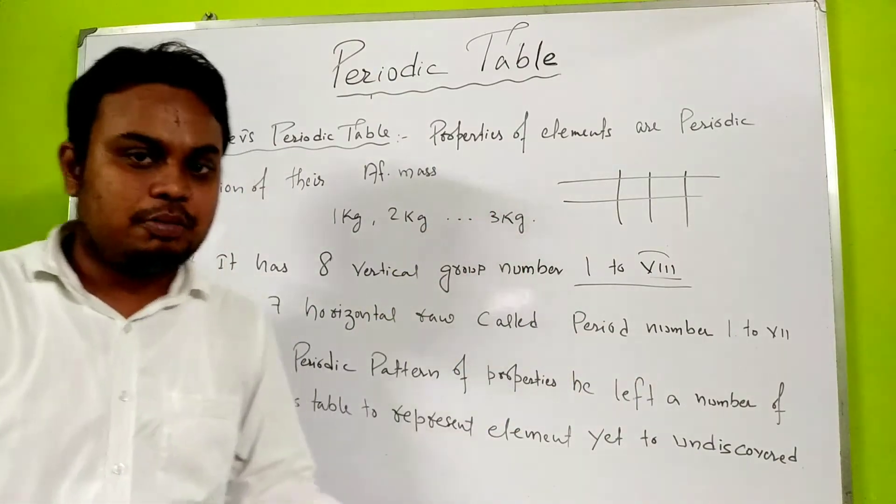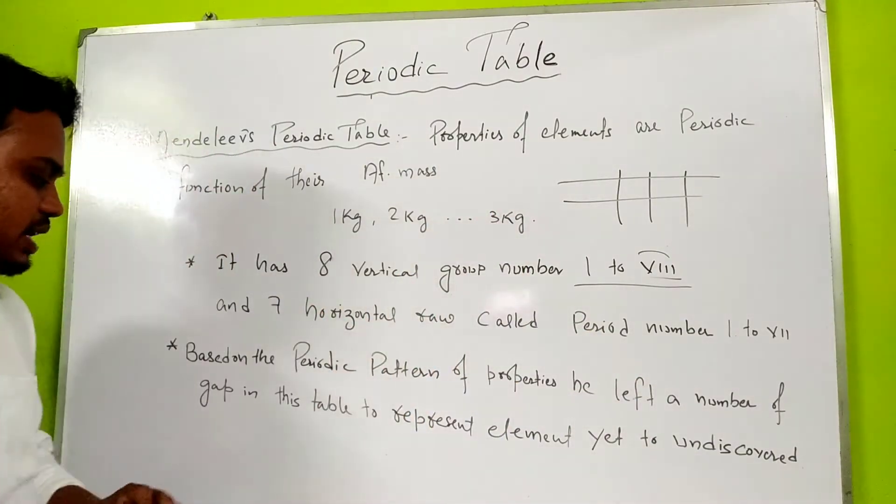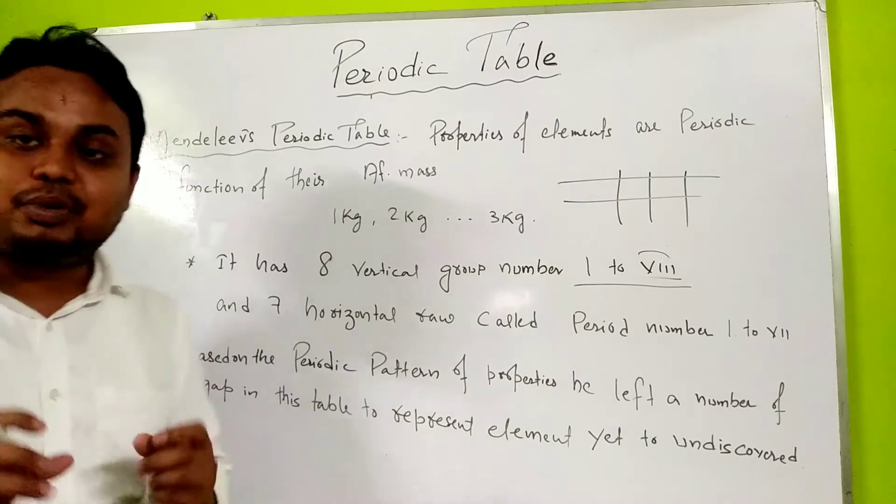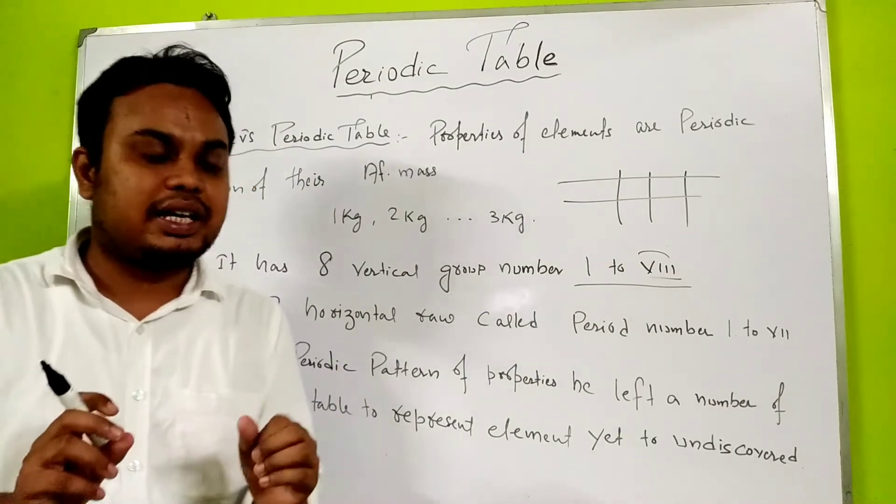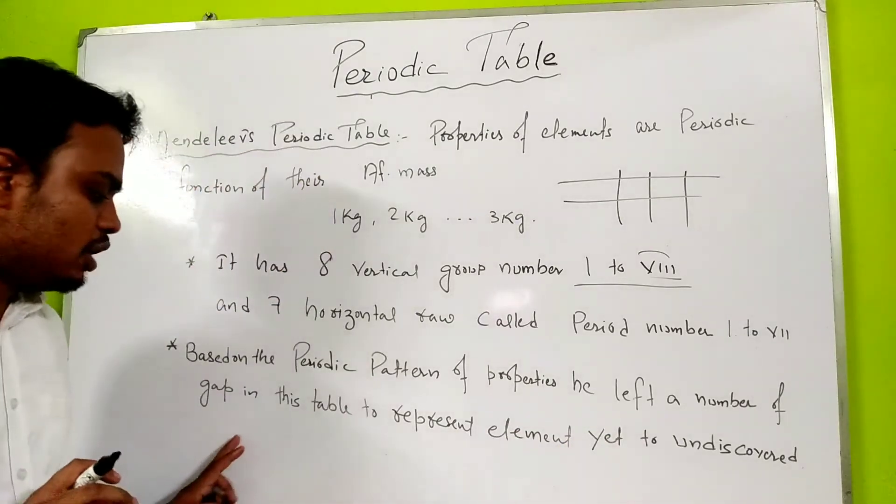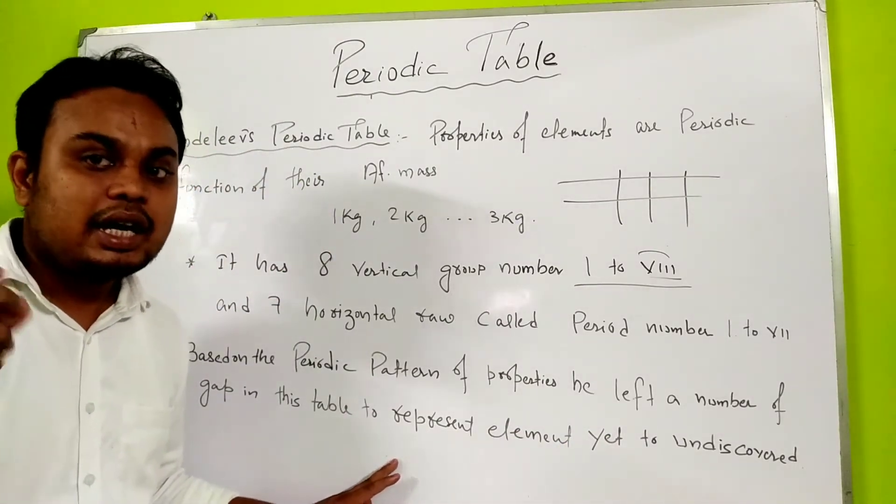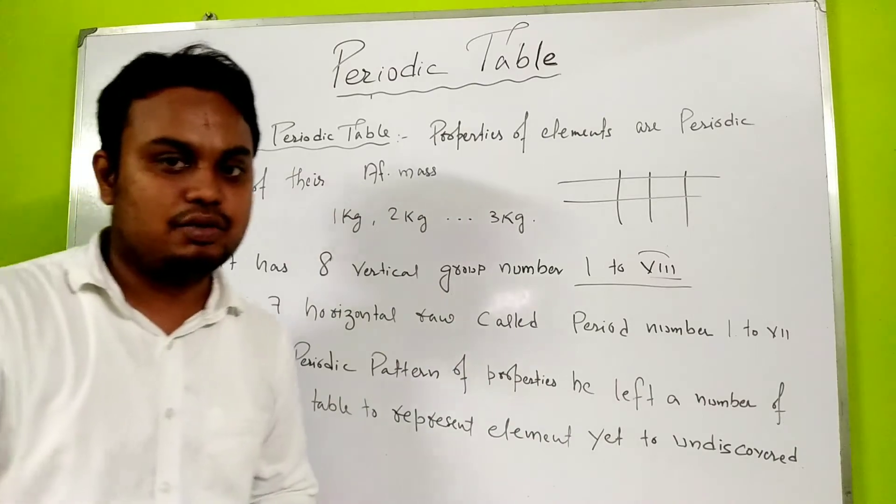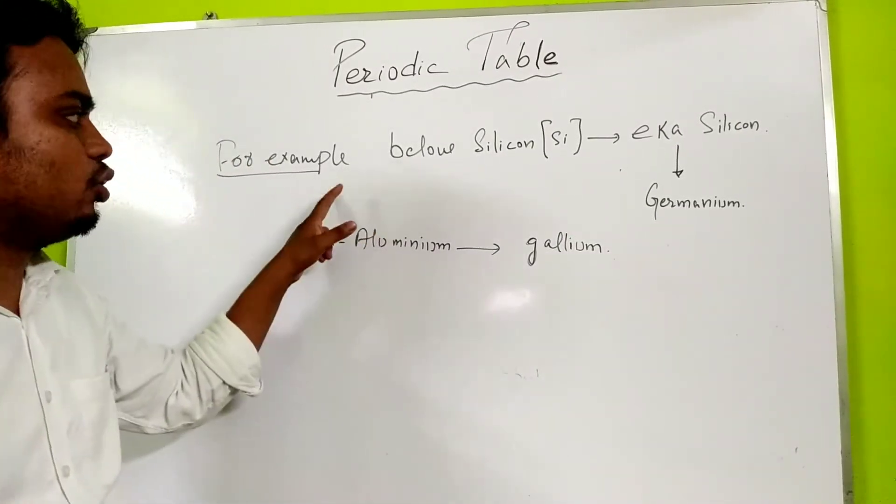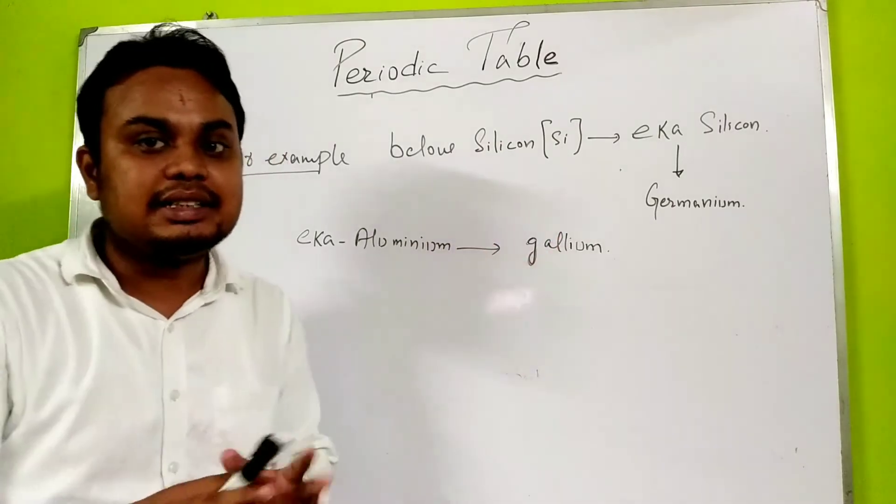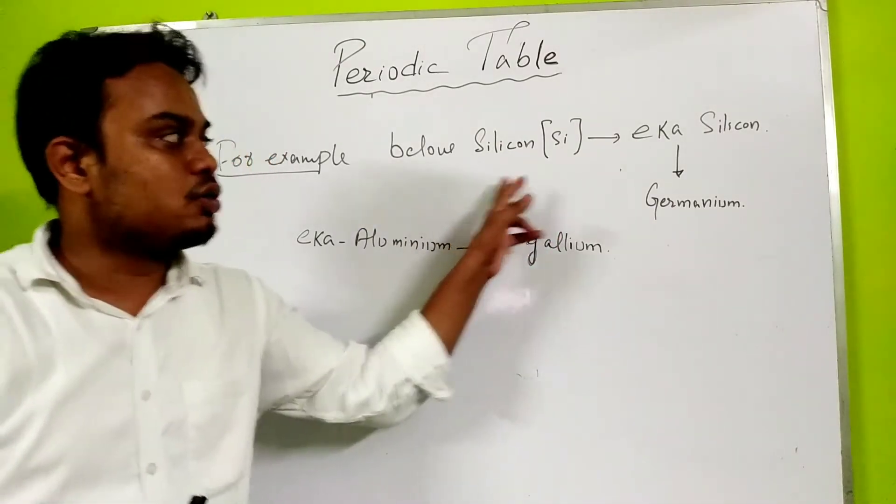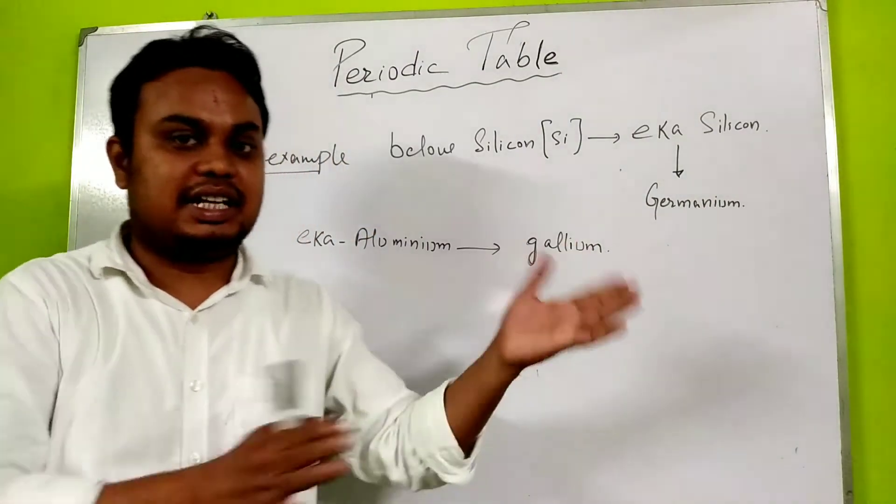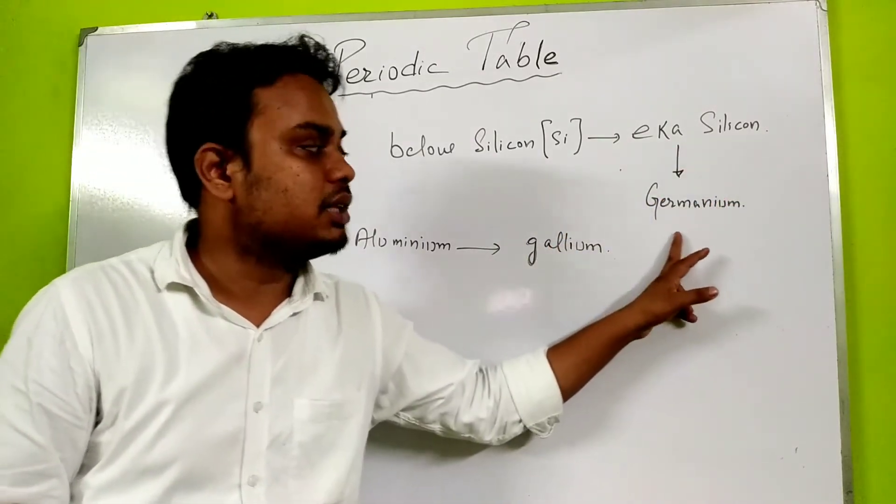Based on the periodic pattern, when Mendeleev arranged the elements by looking at their properties, sometimes he left gaps in his periodic table. He left spaces and said that these elements are yet to be discovered. For example, below silicon he left a space and called it eka-silicon. Later it was discovered and named germanium.